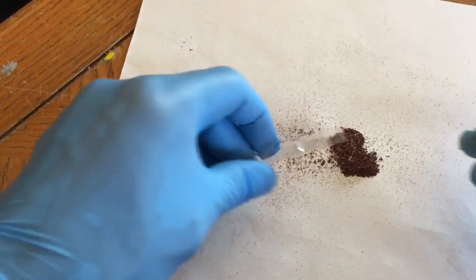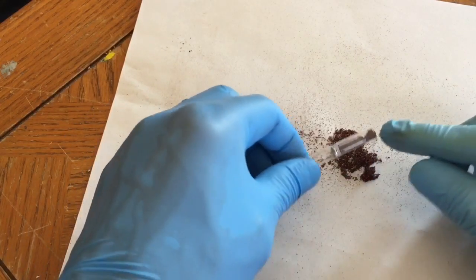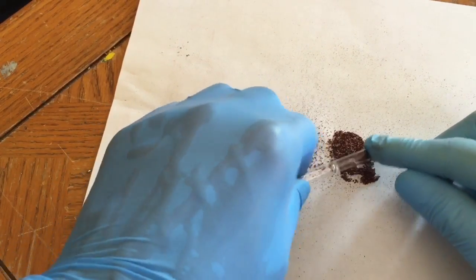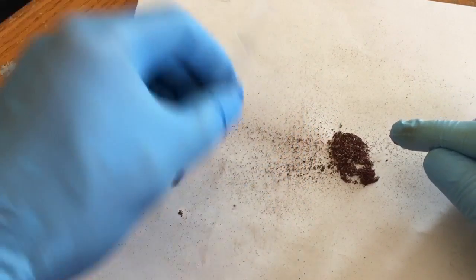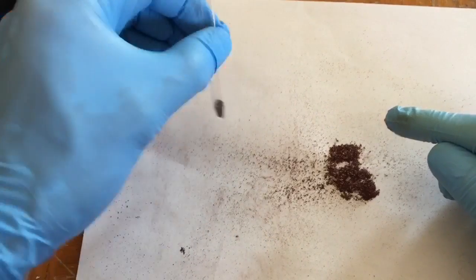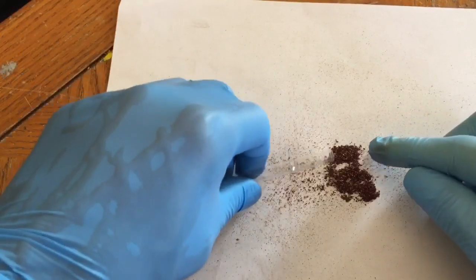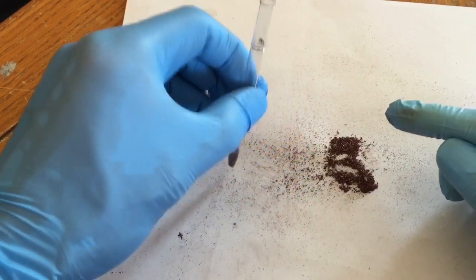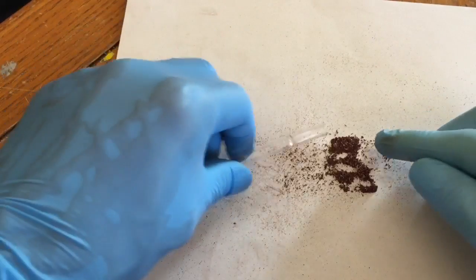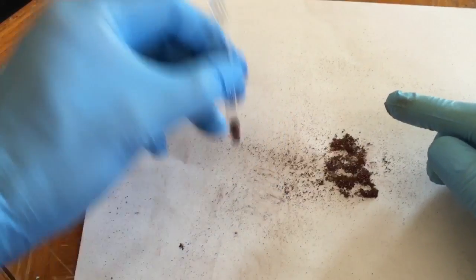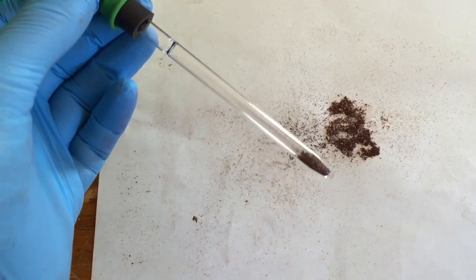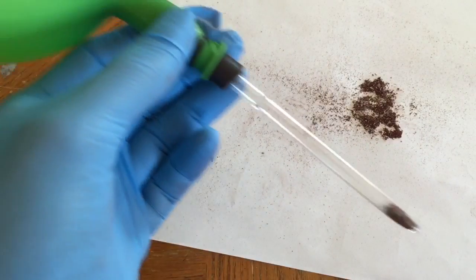Now we're going to put a small amount of this red phosphorus, this amorphous phosphorus, in this tube. Fill it up maybe about just fills the bottom like that. Here we go, that's a good amount.